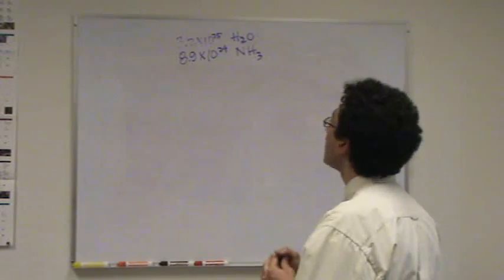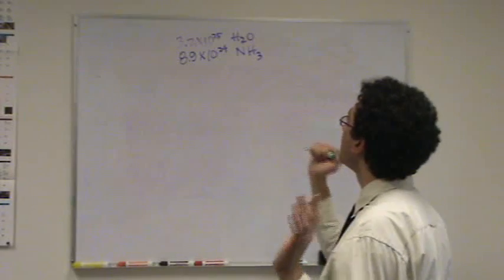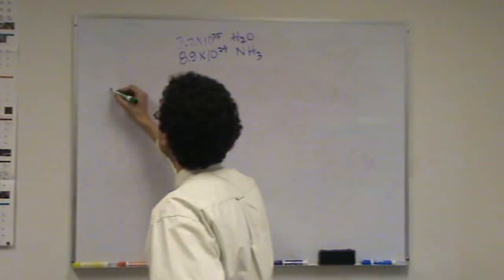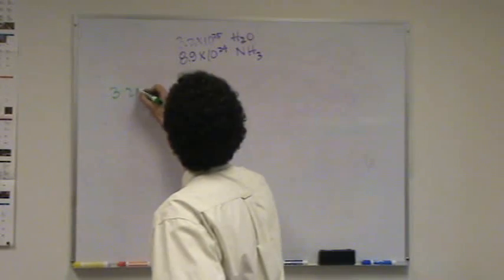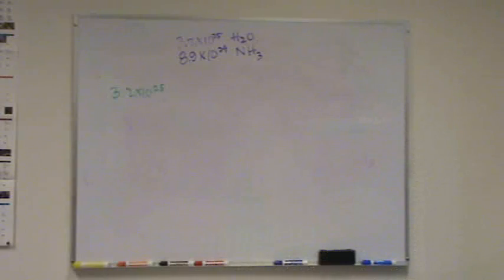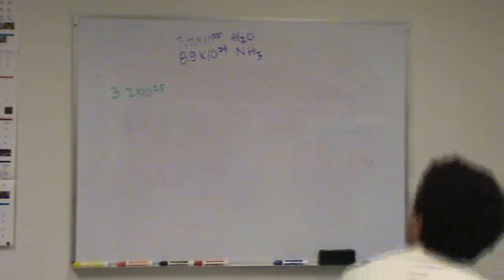Alright, and for the home viewer, you should know the numbers are random generators. You might not have these numbers, but the process will be the same. So, you take 3.2 times 10 to the 25th, and let me make sure I have the units right. That's the number of molecules.